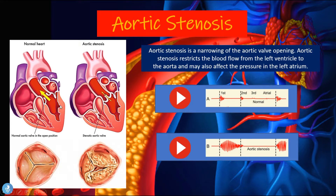Looking at this picture, we see a normal aortic valve which is a tricuspid valve with three leaflets, and then what it looks like in a stenotic patient with a damaged valve. If blood is restricted from moving out of the left ventricle, we'll have a decreased amount of oxygen-rich blood traveling to the rest of the body cells, causing a series of catastrophic events for the patient.